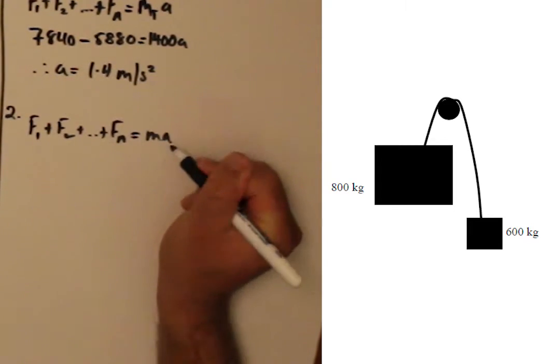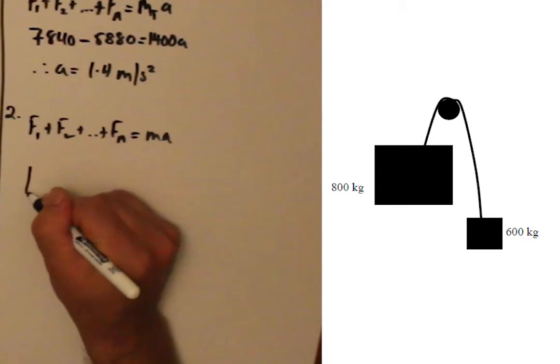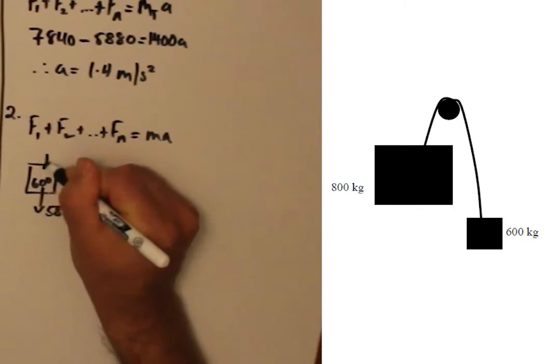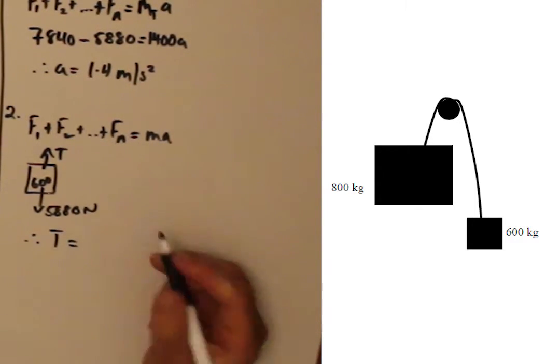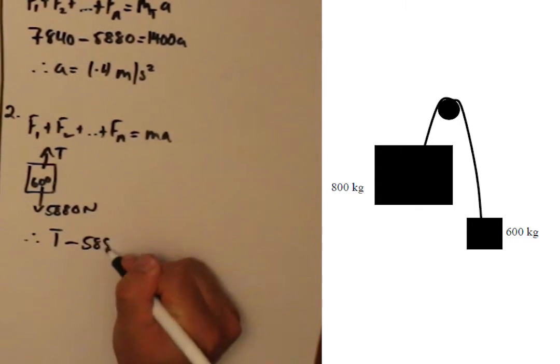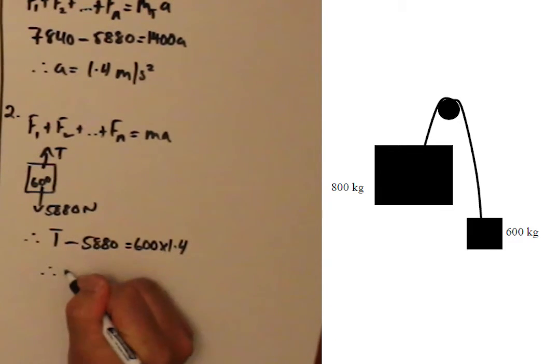Isolating the 600kg mass, we get T minus 5880 equals 600 times 1.4. Therefore, T equals 6720N.